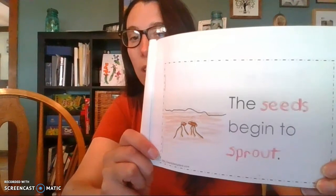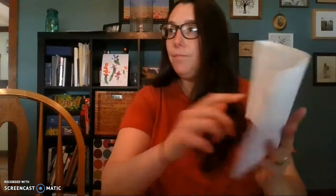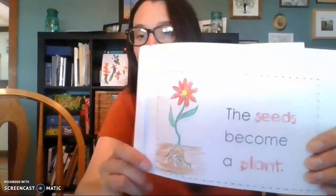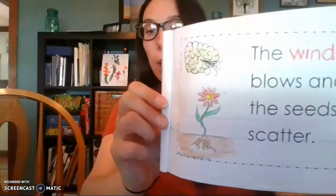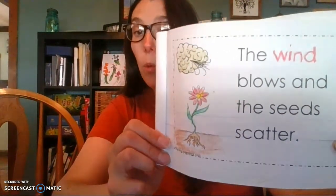The seeds begin to sprout. They're sprouting roots in the ground. The seeds keep growing. The plants are starting to grow. The seeds become a plant - there's our plant, it's a flower. The wind blows the seeds and the seeds scatter, because it means wind or air. After the wind blows, the seeds fall to the ground, and the life cycle starts all over again.